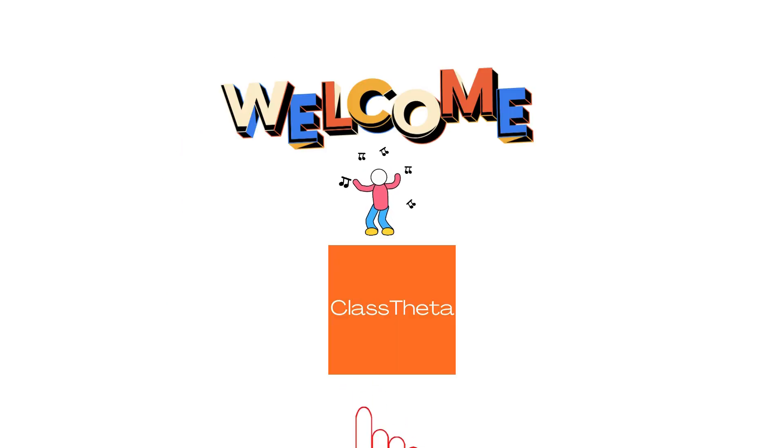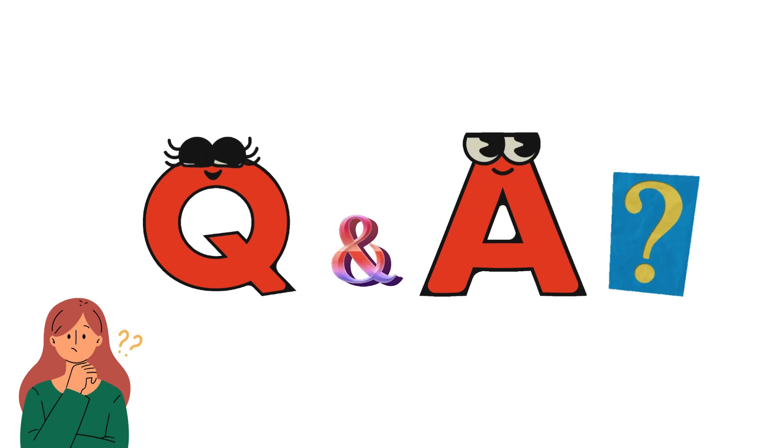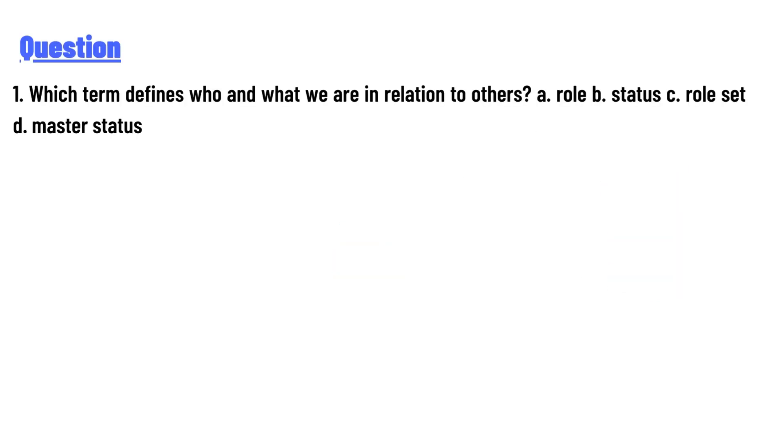I welcome you to ClassTwitter.com. Our today's question is: which term defines who and what we are in relation to others? A. role, B. status, C. role set, D. master status. And the answer to the question is: